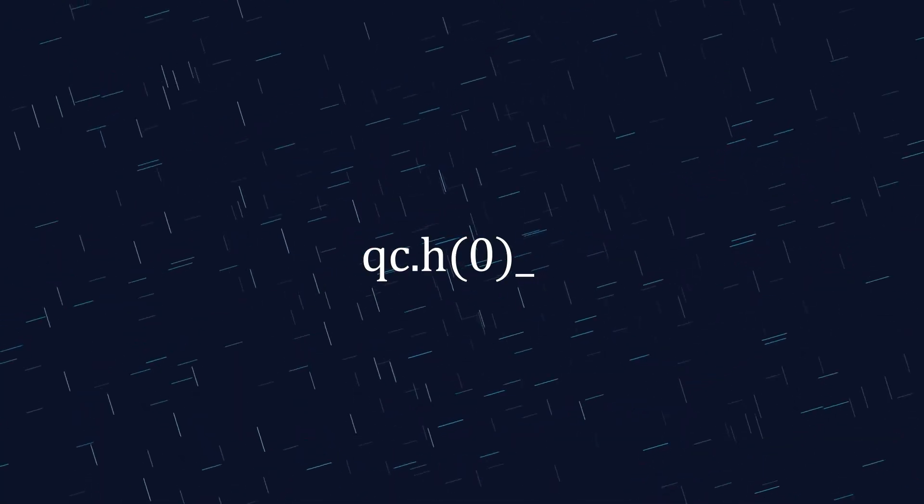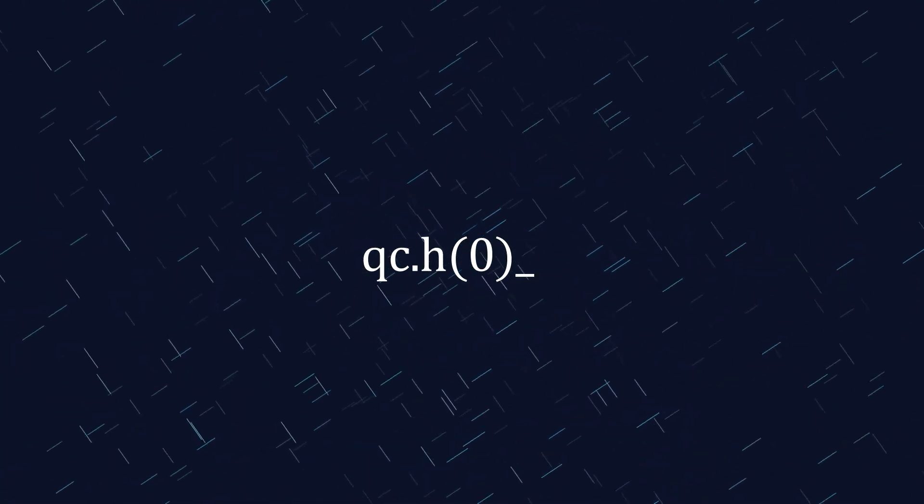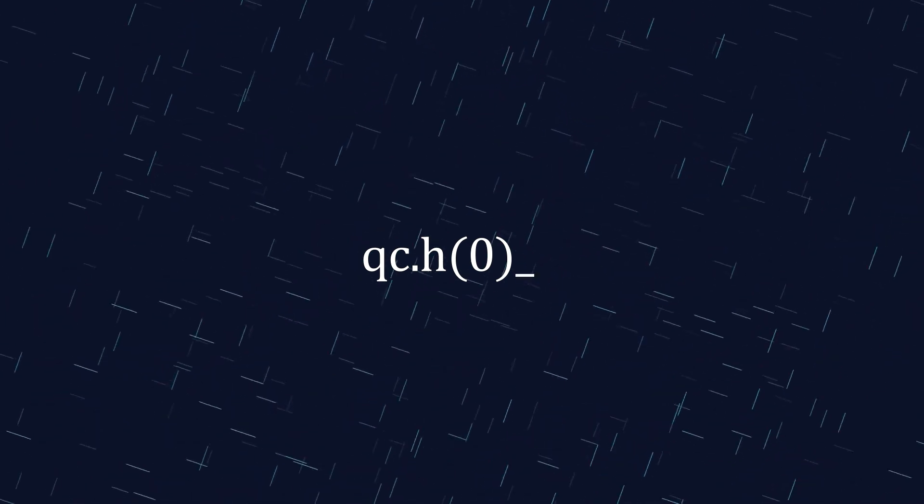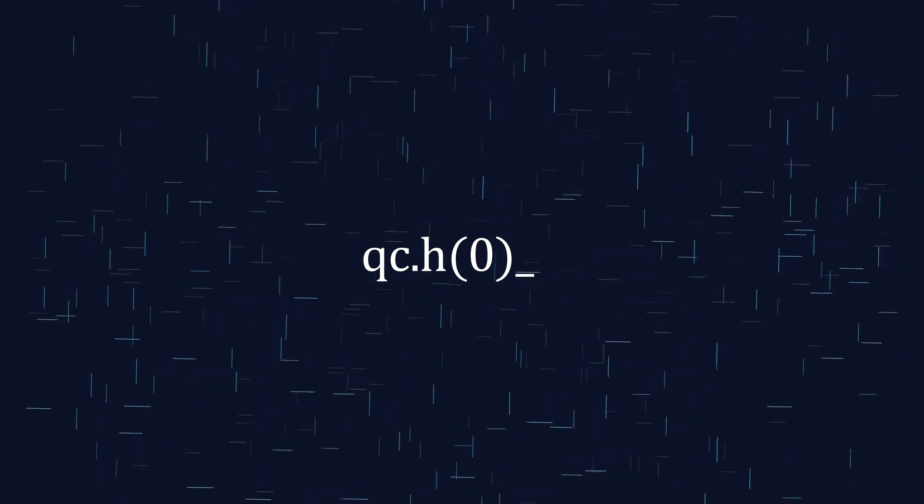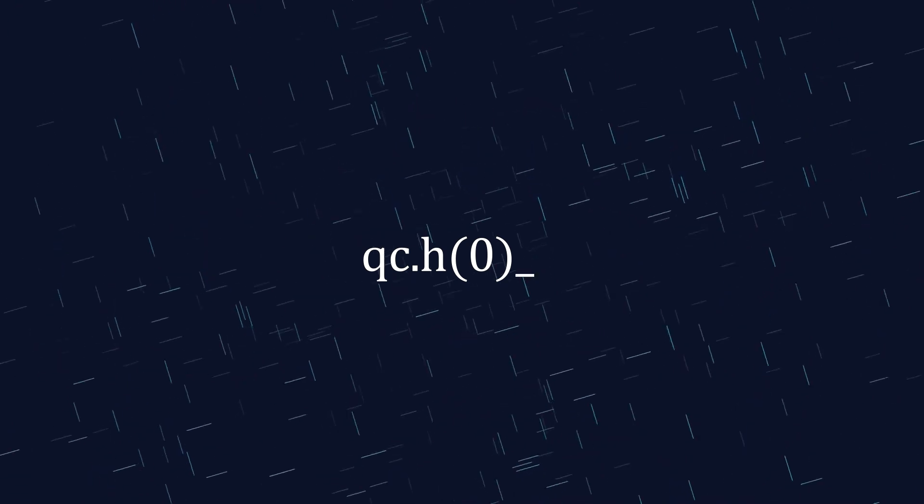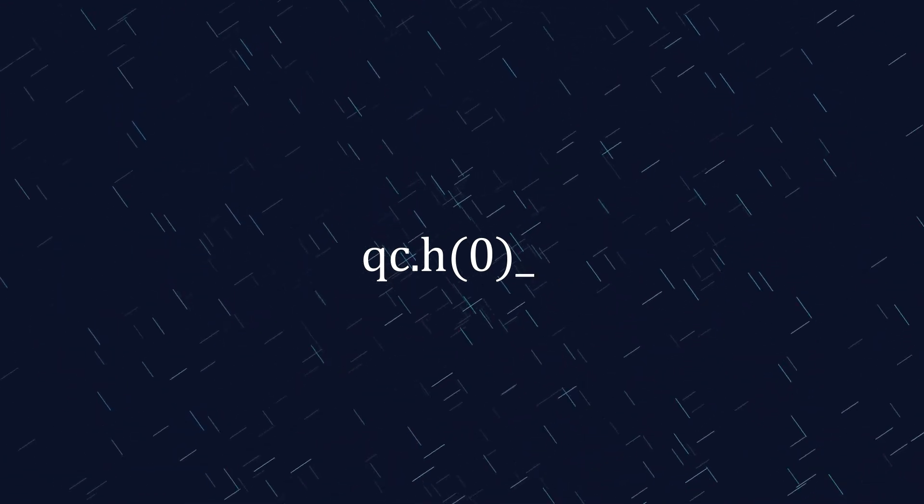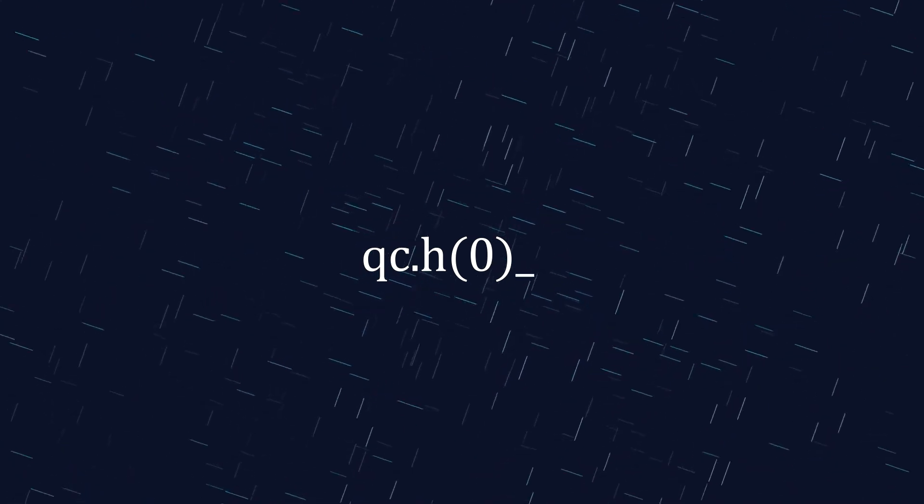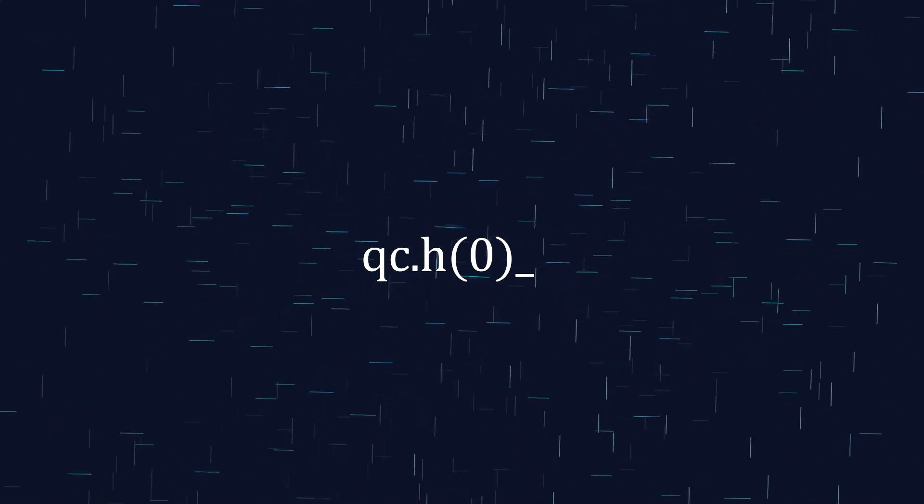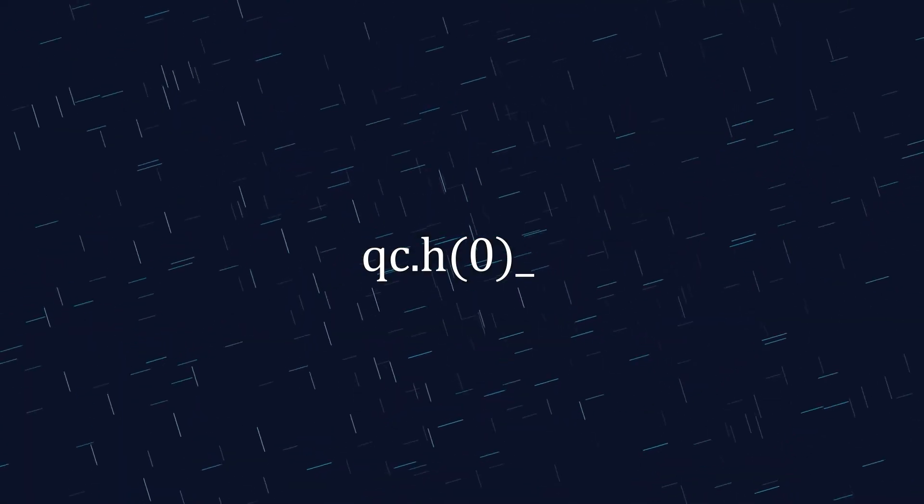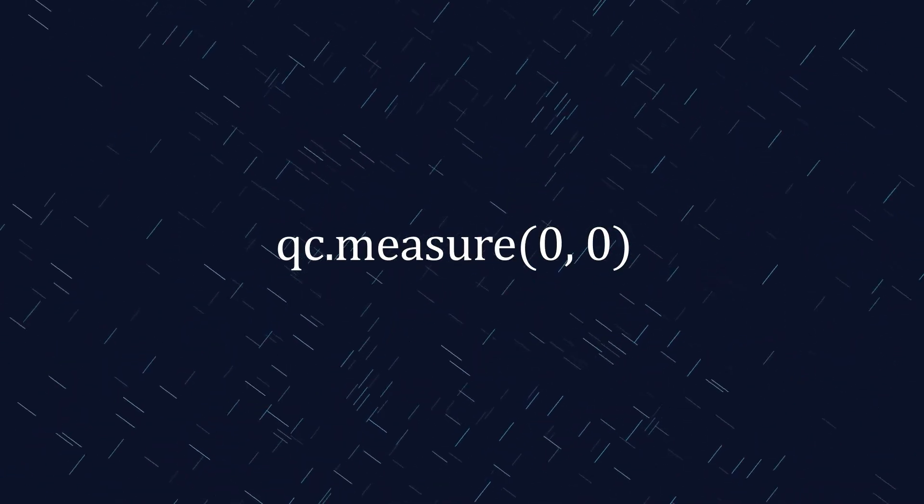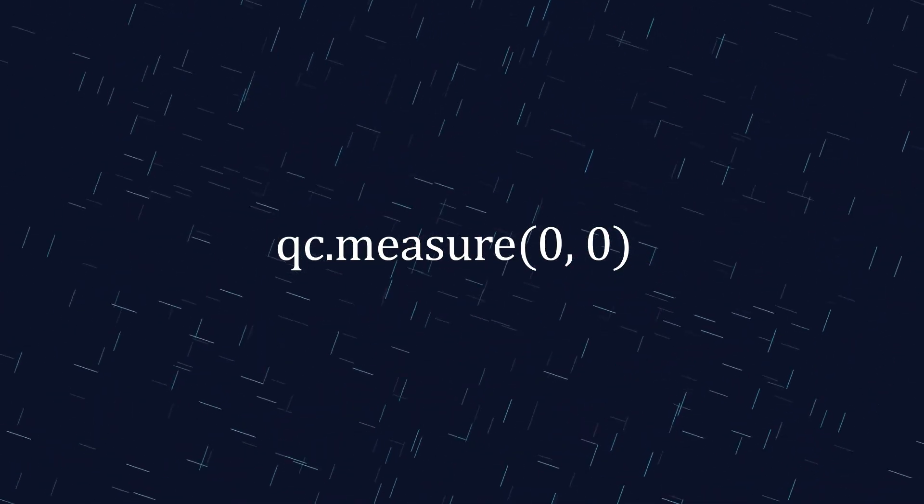To produce a fair 50/50 chance, we apply the Hadamard gate to our qubit. Think of it like flipping a coin. The Hadamard gate takes our qubit from a definite zero or one state and puts it into a superposition, making it equally likely to be measured as heads (represented by one) or tails (represented by zero). Once in superposition, we measure the qubit. At the moment of measurement, the quantum state collapses into a definitive outcome: heads or tails, just like looking at a coin after it's landed.